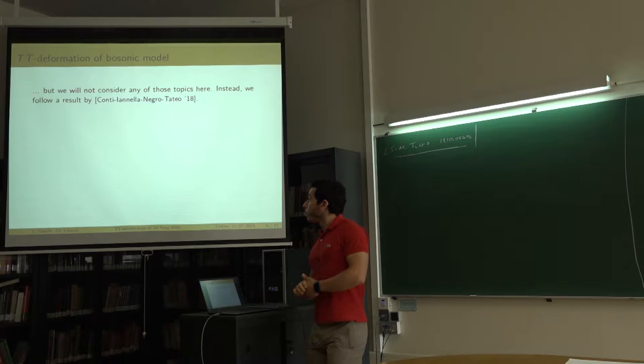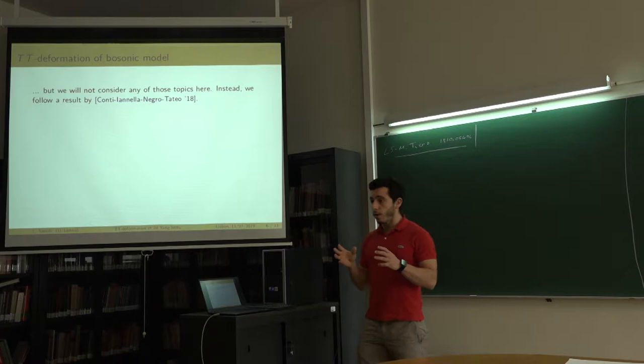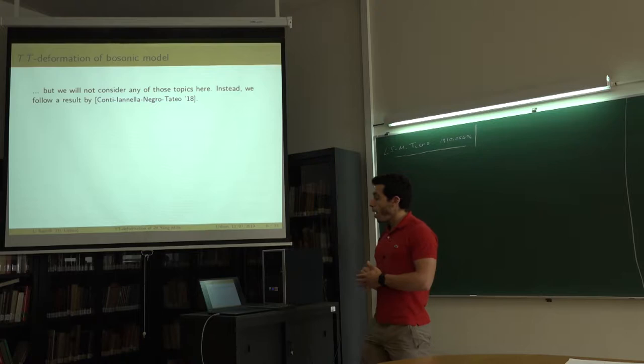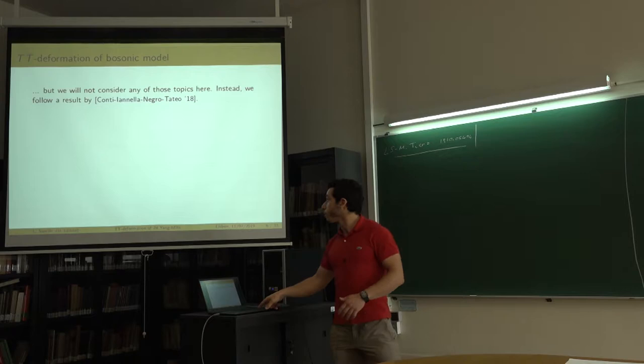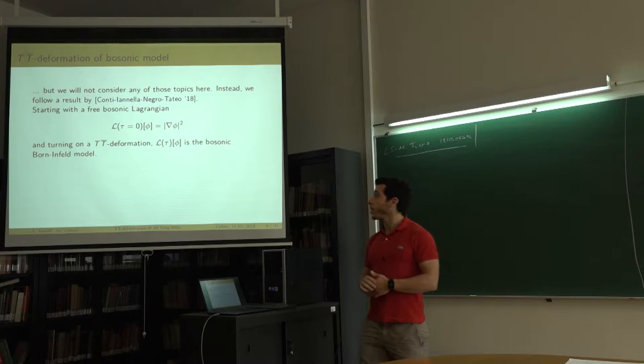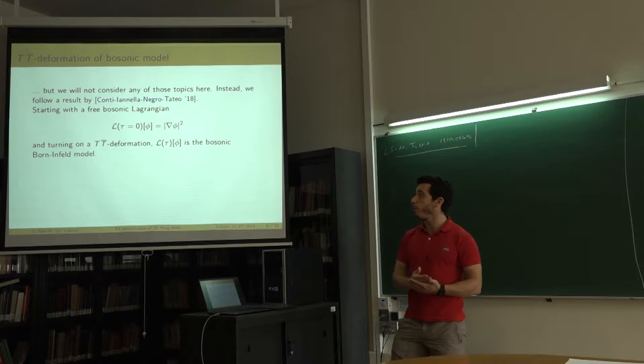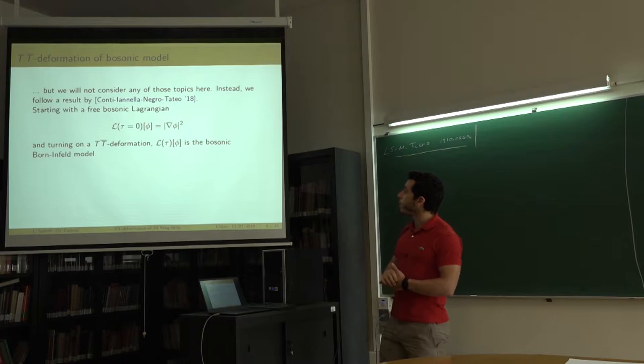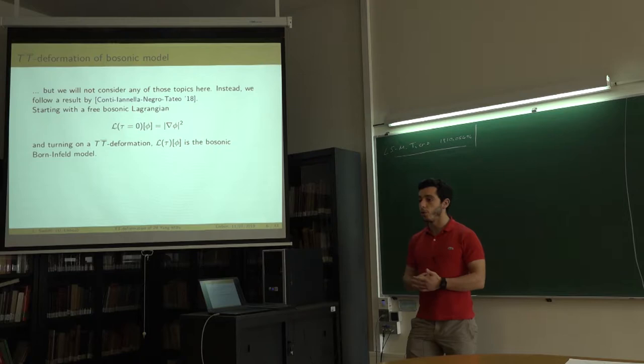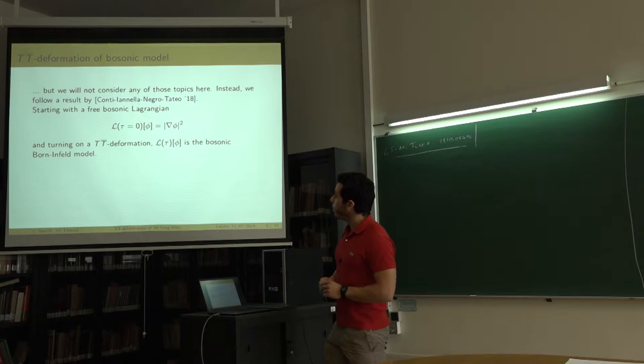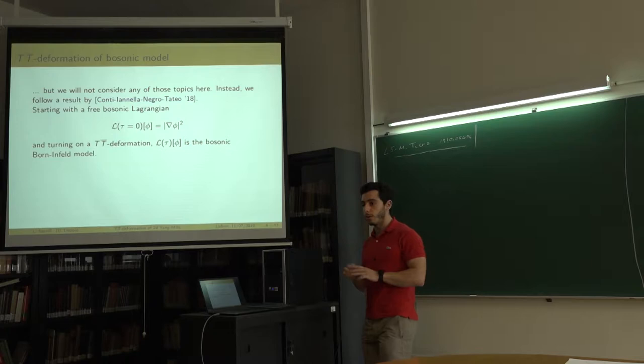I will focus on a result in the paper by Conti, Iannella, Negro, and Tateo and develop it for the case of gauge theory. Starting with a free bosonic Lagrangian without TT-bar deformation, if we turn on this irrelevant deformation parameter, one finds the Born-Infeld model or the bosonic Nambu-Goto model in a specific choice of gauge. I'm using the parameter tau, which is minus alpha from Stefano's talk — a slight difference.